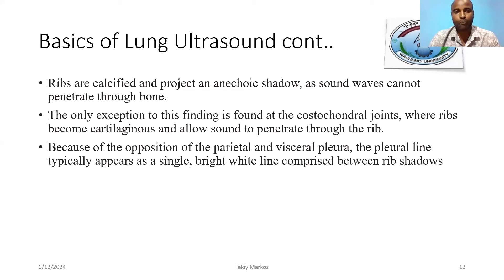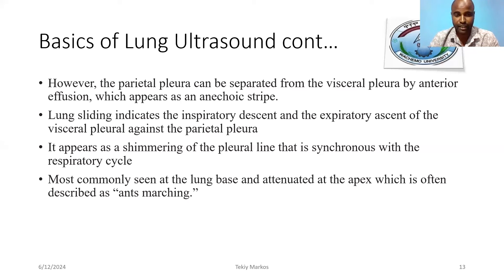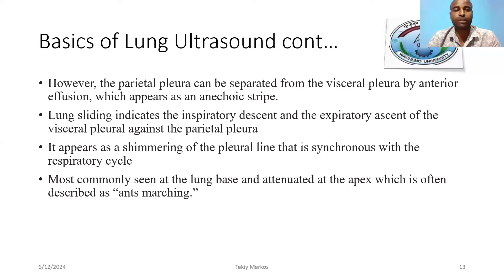Because of the position of the parietal and visceral pleura, the visceral pleura typically appears as a single bright white line. This is the main anatomic landmark for studying lung ultrasound. The parietal pleura can be separated from the visceral pleura by effusion, which appears as an anechoic stretch. Lung sliding indicates the inspiratory descent and expiratory ascending, manifested as a shimmering of the pleural line synchronized with the respiratory cycle.